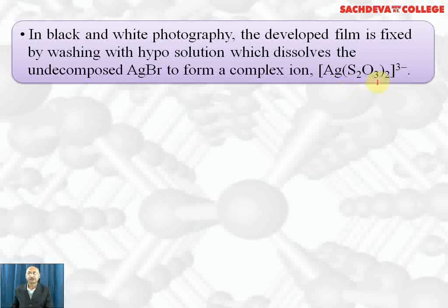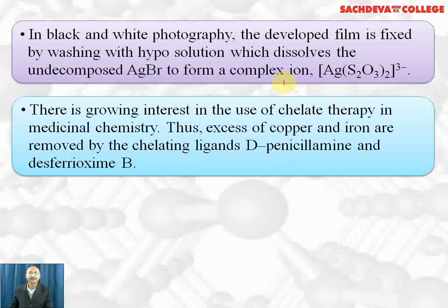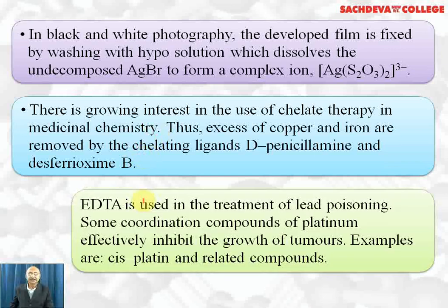In black-and-white photography, sodium thiosulfate (hypo) is used as a fixer — it removes undecomposed AgBr by forming a soluble silver thiosulfate complex, where the coordination number of silver is two and the overall charge is 3−. There is also growing interest in chelate therapy in medicinal chemistry: excess copper and iron are removed by chelating agents D-penicillamine and desferrioxamine B; EDTA is used in treatment of lead poisoning; and some platinum coordination compounds such as cisplatin are effective anti-tumor agents.